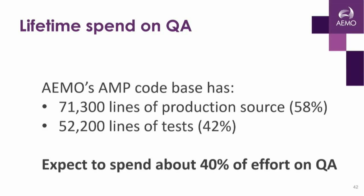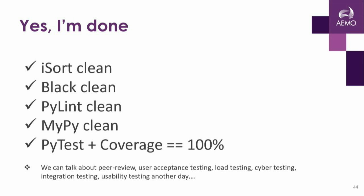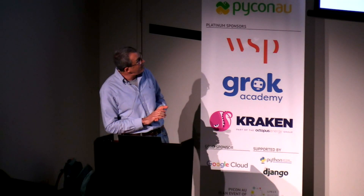AEMO's AMP code base now has 71,000 lines of production source and 52,000 lines of unit tests — around 40% of our code is unit tests. Back to the hardest question for a coder: are you done? We now have an unambiguous, objective way to answer that. iSort is clean, Black is clean, PyLint is clean, MyPy is clean, you have unit tests, and coverage is at 100%. We can talk about peer review, user acceptance testing, load testing, integration testing, and all those other things later — but this is a tool for the coder.